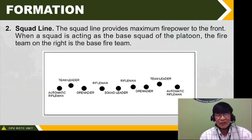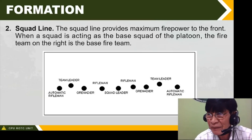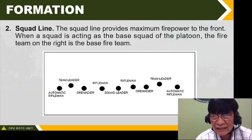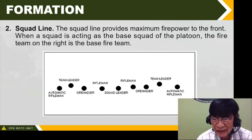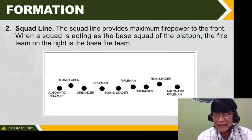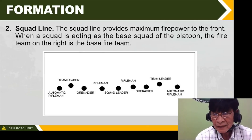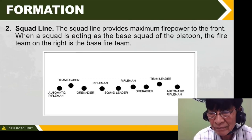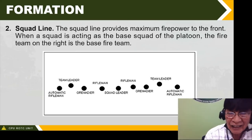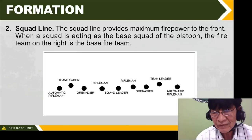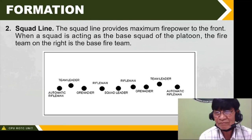Squad line: this formation provides maximum firepower to the front when the squad is acting as the base squad of the platoon. The fire team on the right is the base fire team. This is Alpha team and Bravo team in line formation. Bravo team is on the left side, Alpha team is on the right side — going toward the enemy.